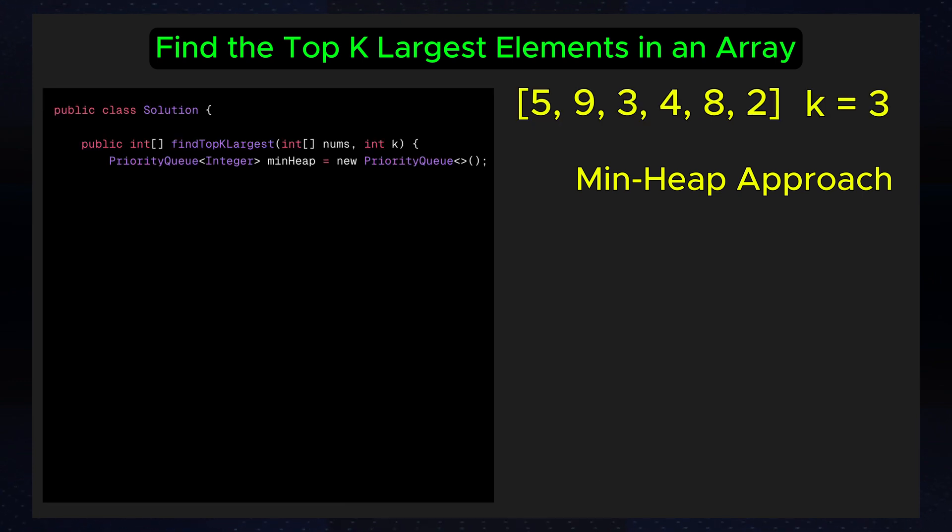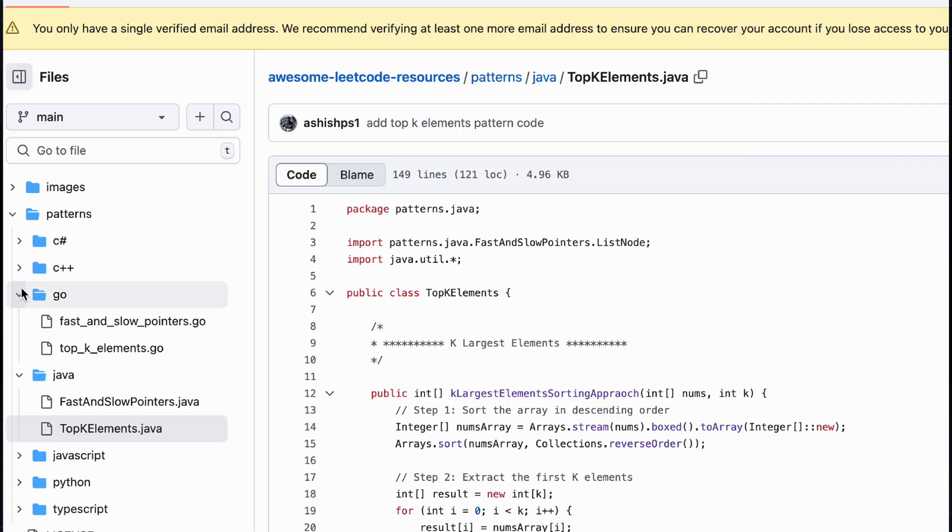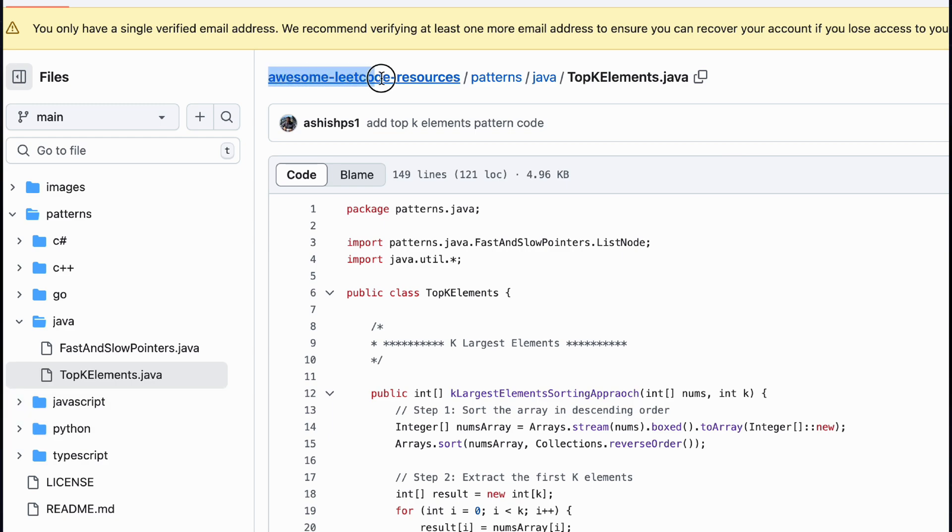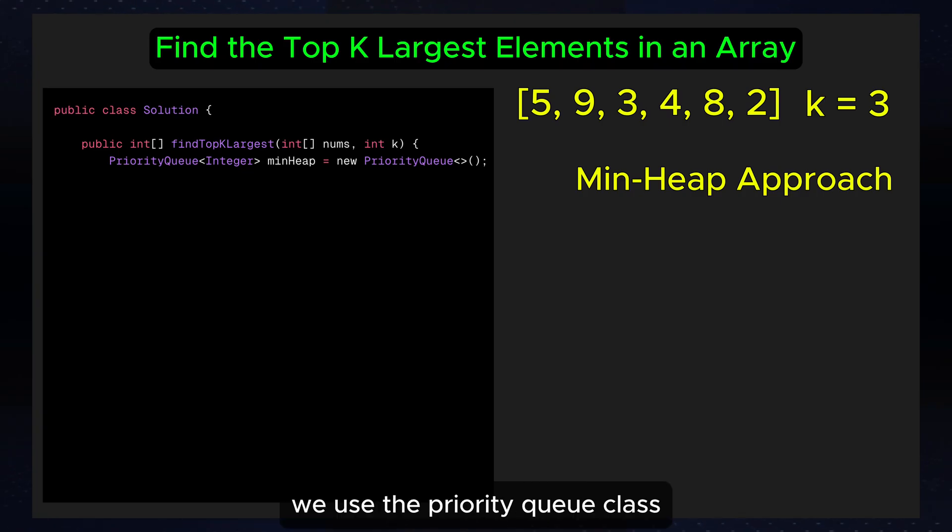Here is how it works. Initialize a min heap. Here I am using Java, but you can find code for other popular programming languages in my GitHub repository called awesome LeetCode resources. In Java, we use the priority queue class to implement heaps. By default, Java's priority queue is a min heap.